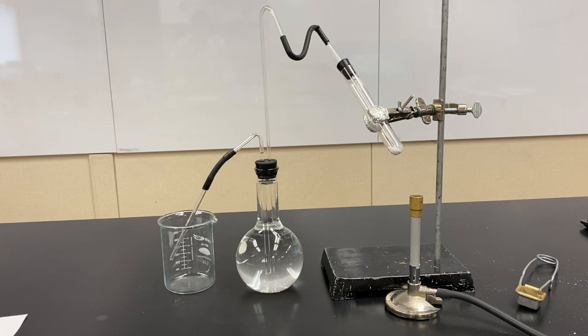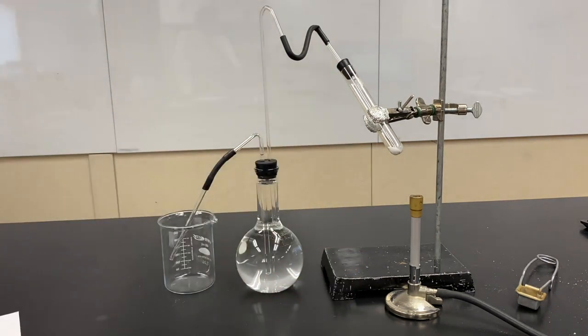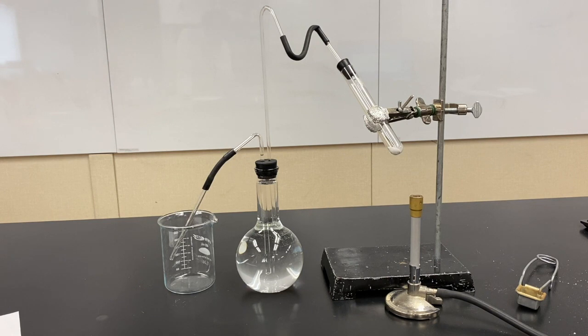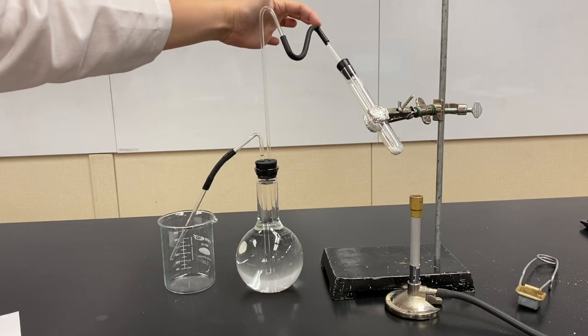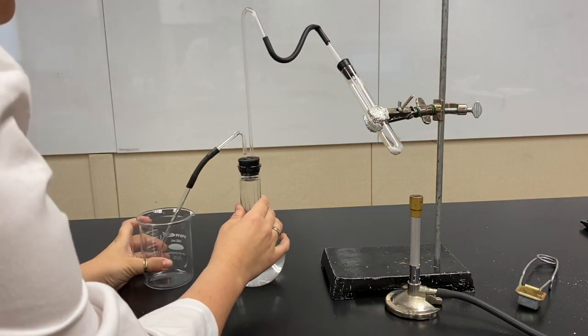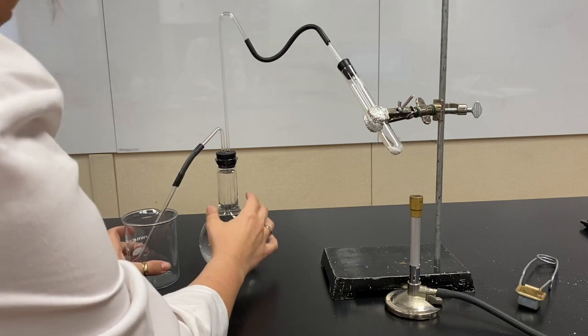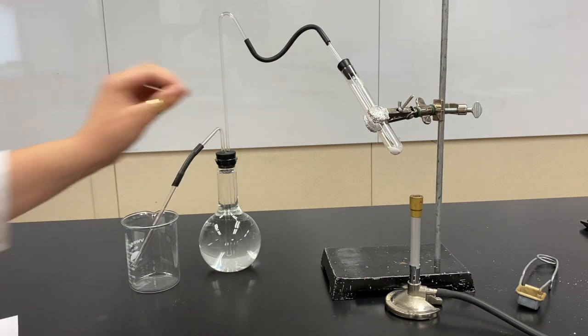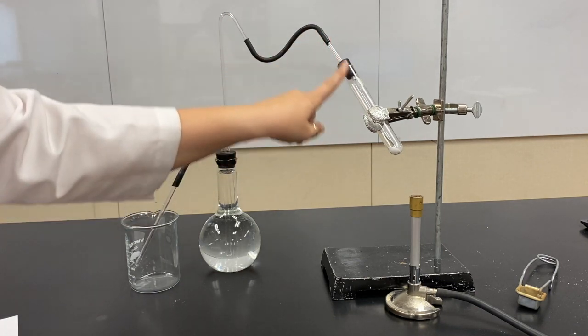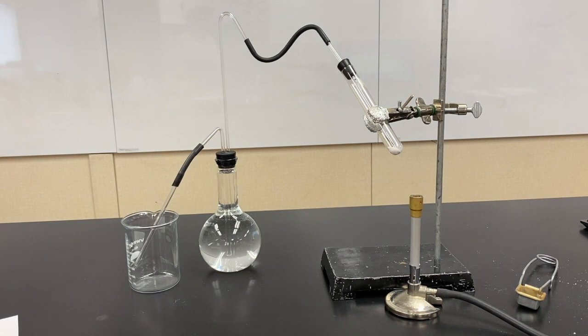And then the step that everyone always misses, it says be sure that there are no kinks in the rubber tubing. So very typically, you'll have this all set up, you'll light the Bunsen burner, nothing happens. And a lot of times the reason why is there's a kink like this in your rubber tubing. So you want to make sure that you just kind of angle everything so it's nice and smooth. There's no kinks. You want that gas to be able to move easily through your apparatus.